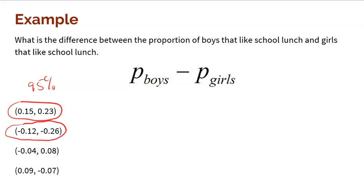If the entire interval is negative, that means the proportion of girls that like school lunch is going to be bigger. How much bigger? Anywhere from 12% bigger to 26% bigger. Where do the negatives come into play? If I want this difference to be negative, the proportion of girls has to be bigger, or equivalently the proportion of boys has to be lower. I could look at this as the boys being 12% to 26% lower than the girls, or the girls being 12% to 26% higher.